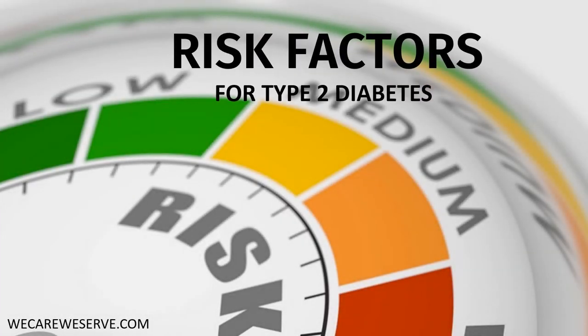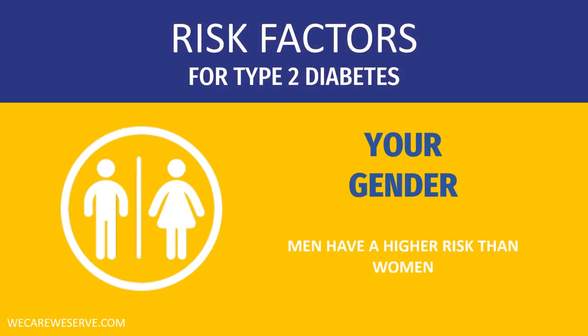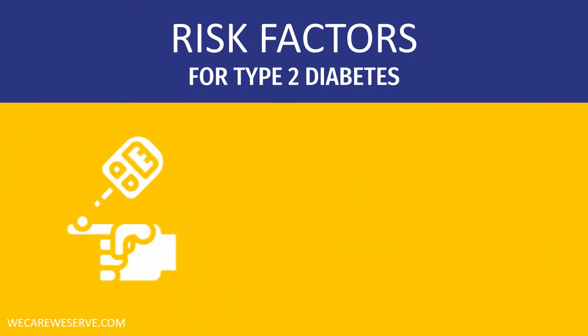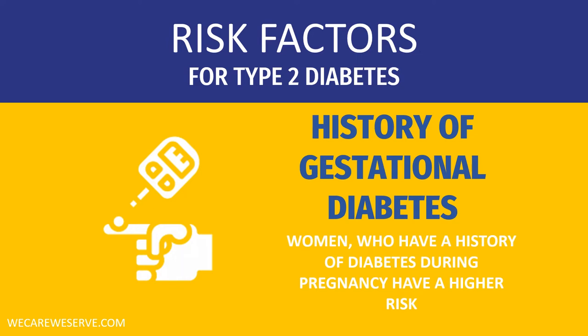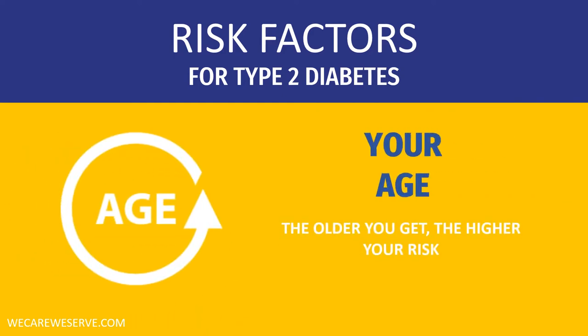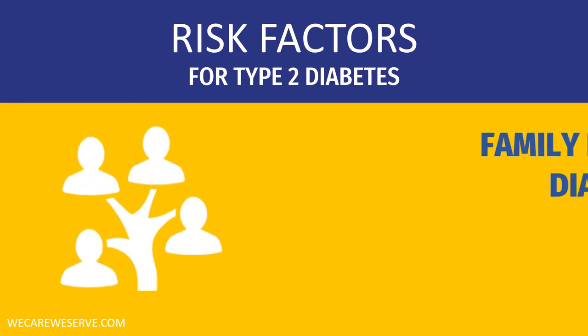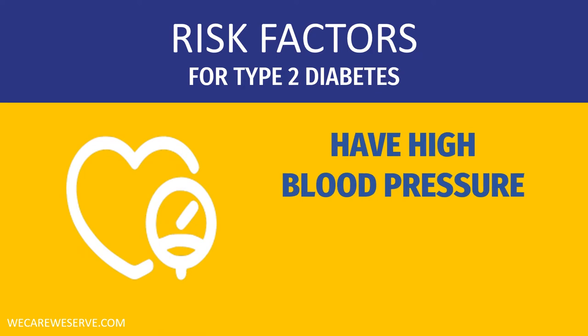Risk factors for type 2 diabetes: your gender — men have a higher risk than women. A history of gestational diabetes — women who have had diabetes during pregnancy have a higher risk. Your age — the older you get, the higher your risk. Family history of diabetes — if you have a close relative such as your father, mother, brother, or sister with diabetes, you have a higher risk.